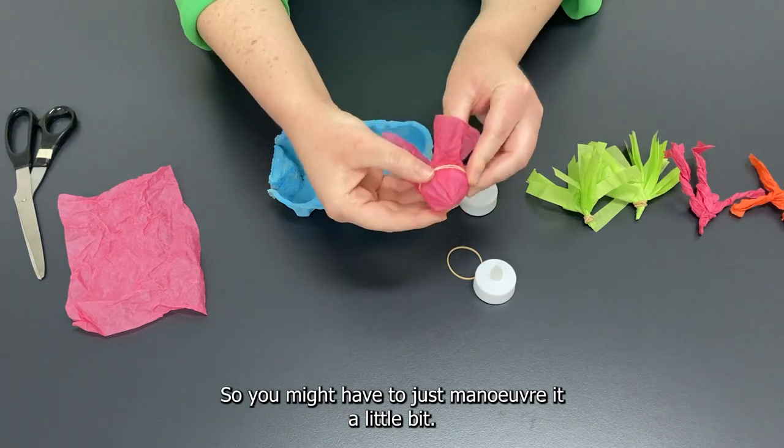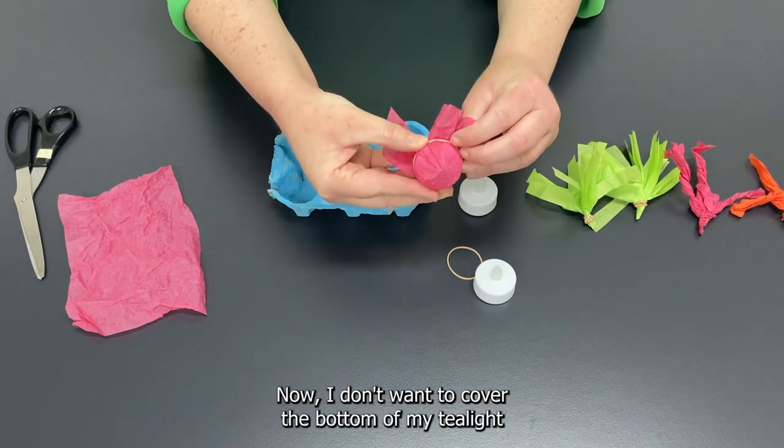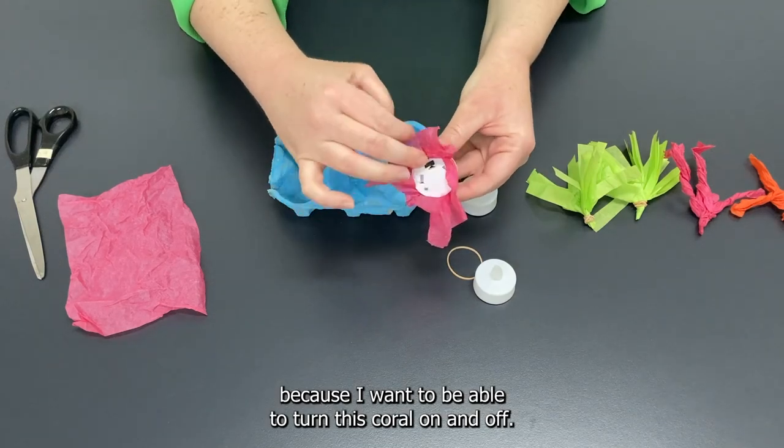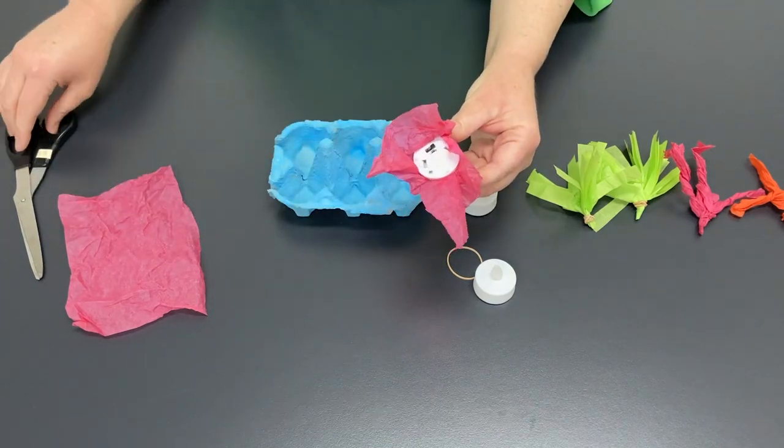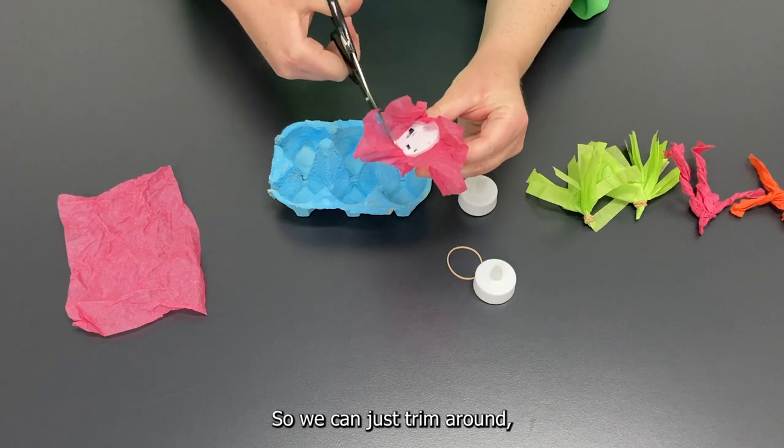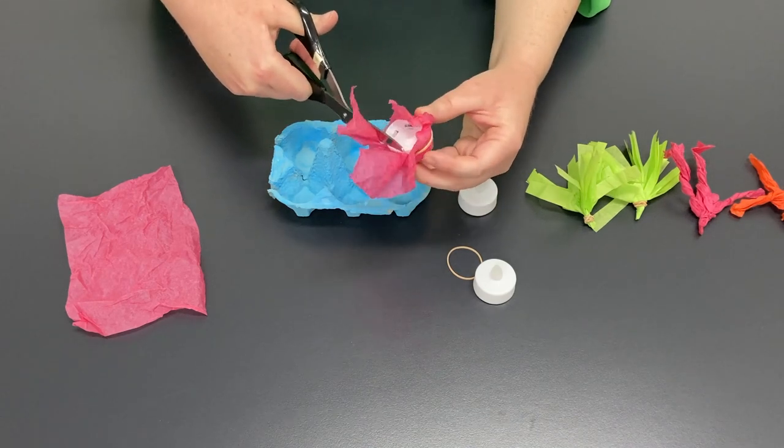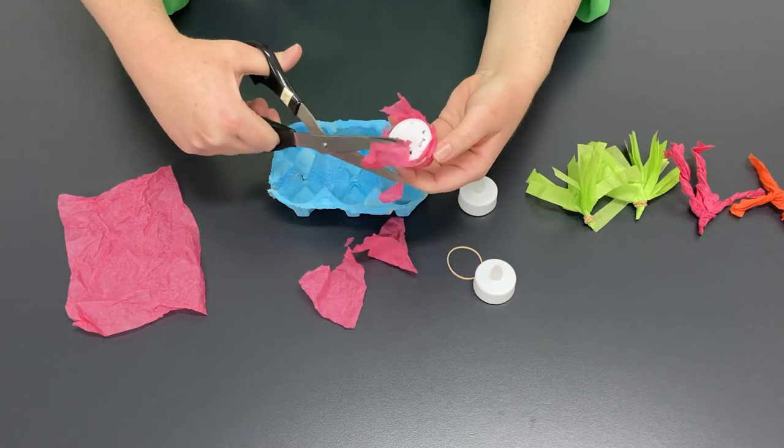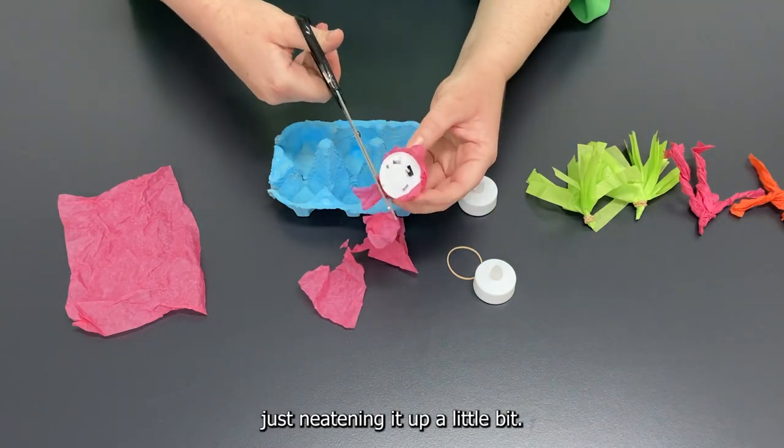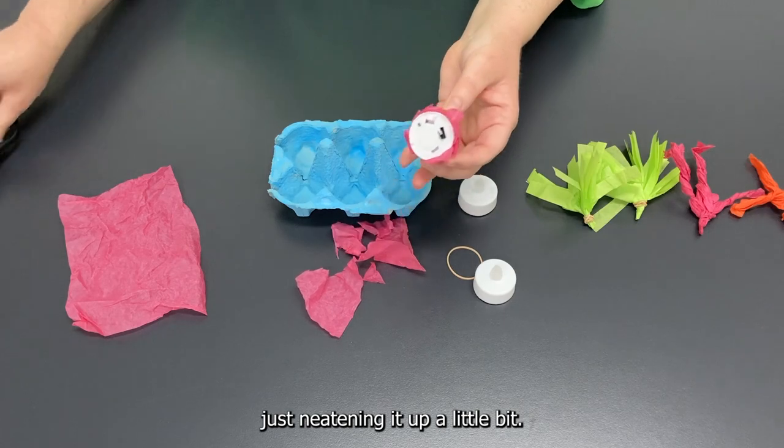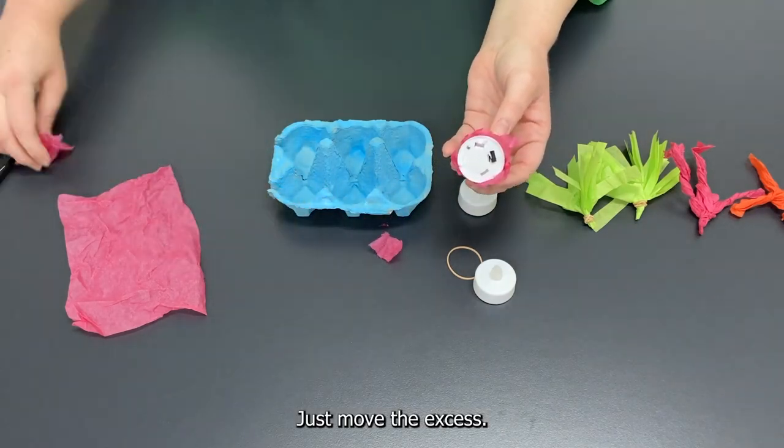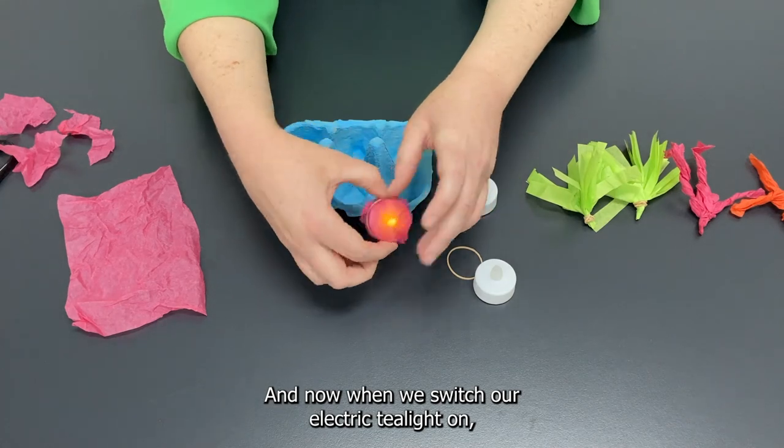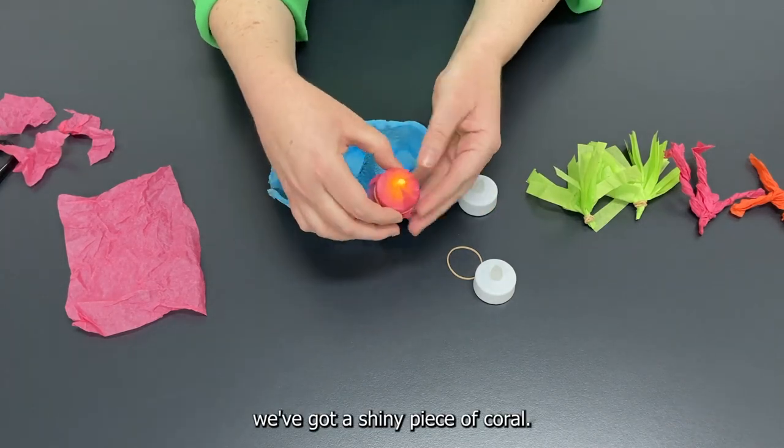You might have to just maneuver it a little bit. Now I don't want to cover the bottom of my tea light because I want to be able to turn this coral on and off so we can just trim around. Just neatening it up a little bit. Just remove the excess and now when we switch our electric tea light on we've got a shiny piece of coral.